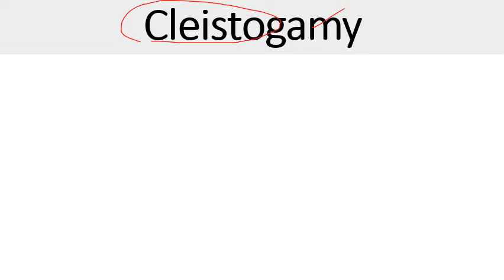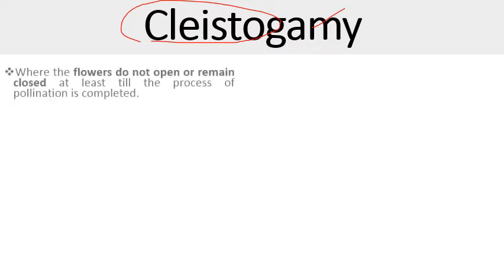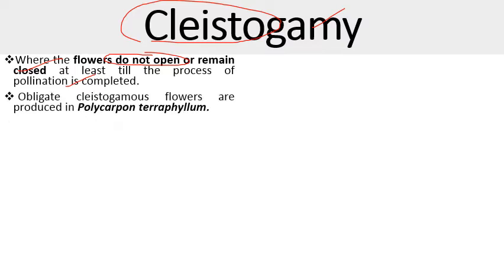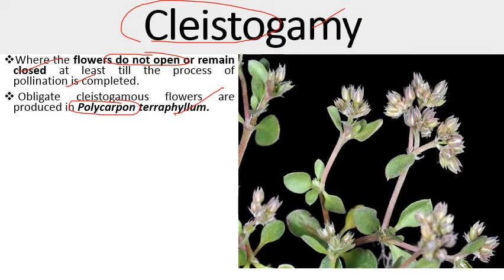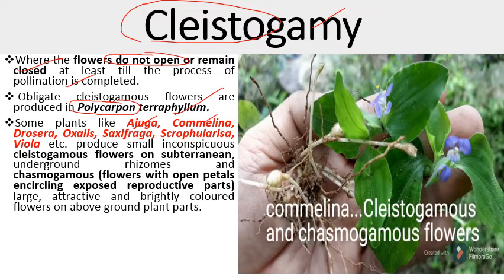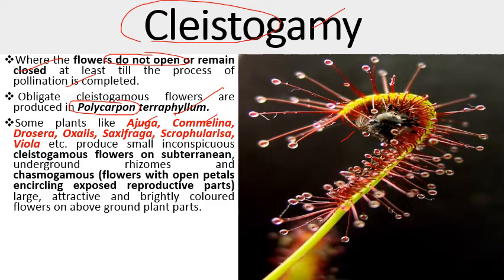The next type is cleistogamy — a type of pollination where the flowers do not open, or remain closed, at least until the process of pollination is completed. Some plants are obligatory cleistogamous, meaning they produce only cleistogamous flowers — for example, Polycarpon tetraphyllum. Some plants like Ajuga, Commelina, Drosera (the sundew plant), and Oxalis also produce cleistogamous flowers.